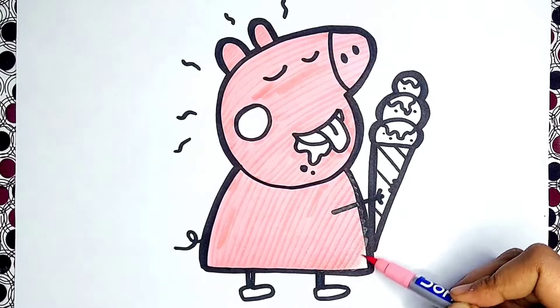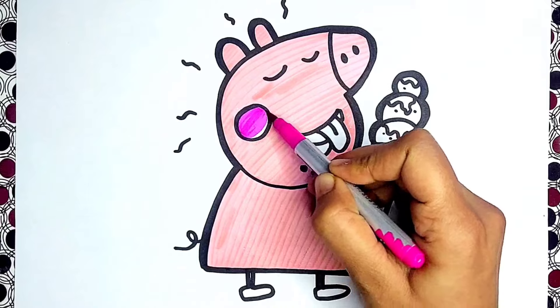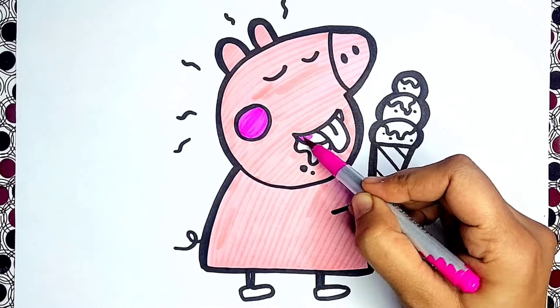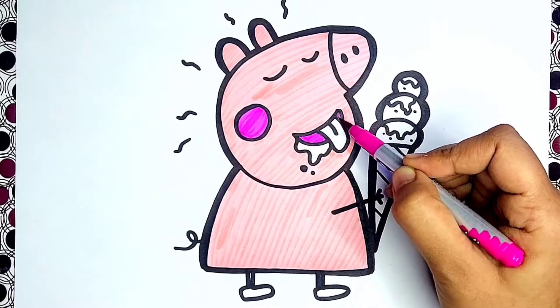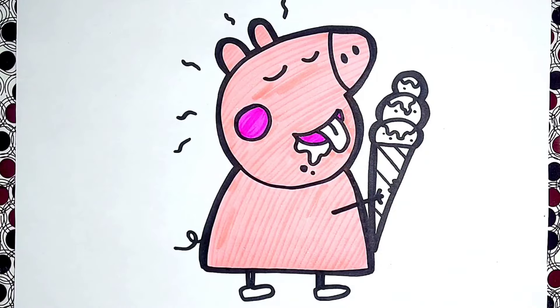Now I am using bright pink color for her cheek and her smiley mouth. Now I am using bright pink color for Peppa's tongue.